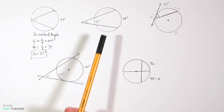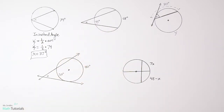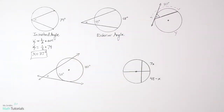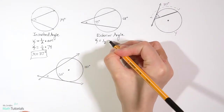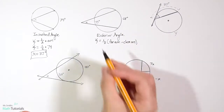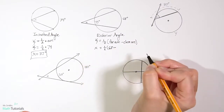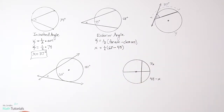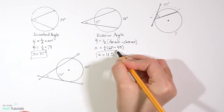In the next example, it's similar to the inscribed angle, but this time the lines extend beyond the circle and the angle occurs outside the circle — so this is an exterior angle. The formula is: angle equals one half times the far arc minus the close arc. So x equals one half times 68 minus 45. One half times 23 gives x equals 11.5 degrees, and it is okay to get a decimal.